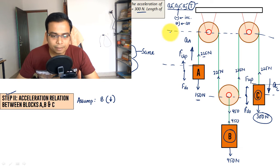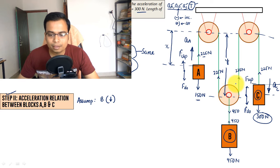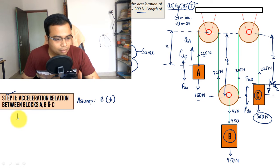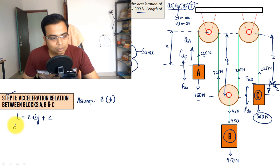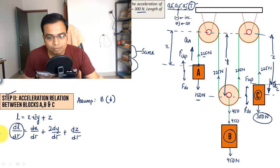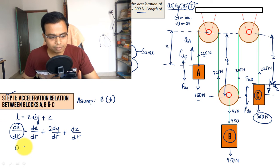Now for step two — the string constraint. Let the string portions be x, y, and z. The overall length of the string is x + 2y + z. Differentiating with respect to time: dL/dt = dx/dt + 2·dy/dt + dz/dt. Since the total length is constant, this derivative equals zero.